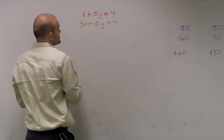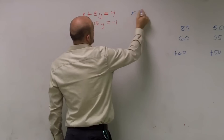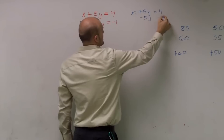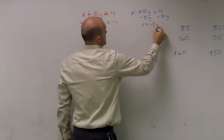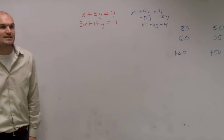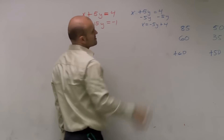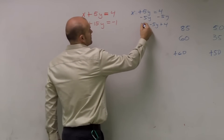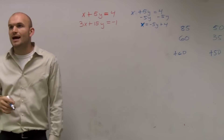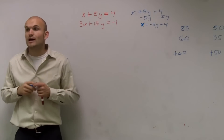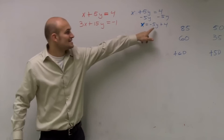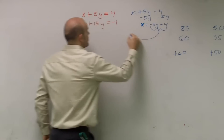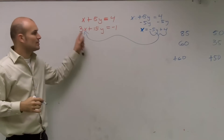So I want to solve for x. Starting with x plus 5y equals 4, I subtract 5y from both sides. Therefore, x equals negative 5y plus 4 — or 4 minus 5y, however you want to write it. My value of x equals negative 5y plus 4, and I can substitute that in for x in the other equation.